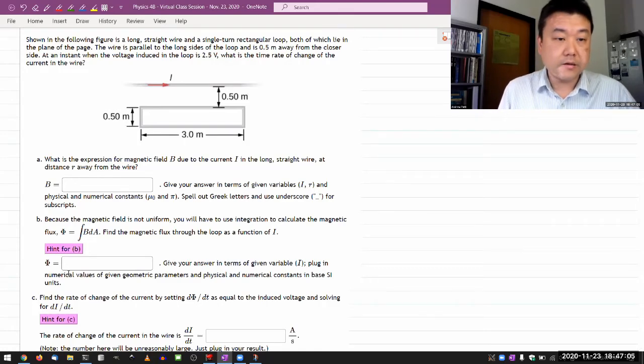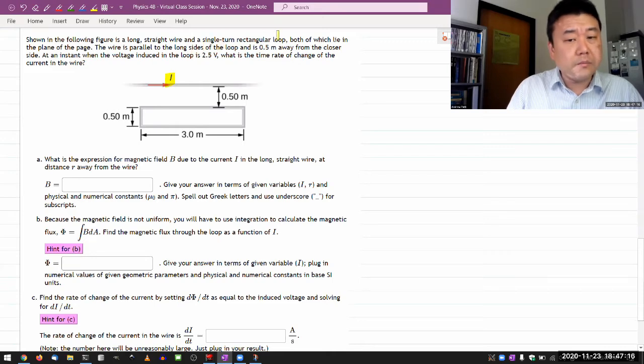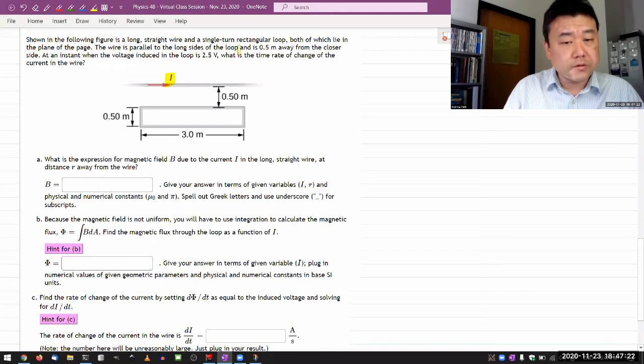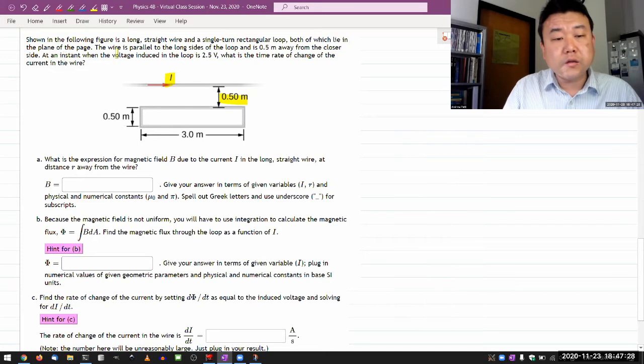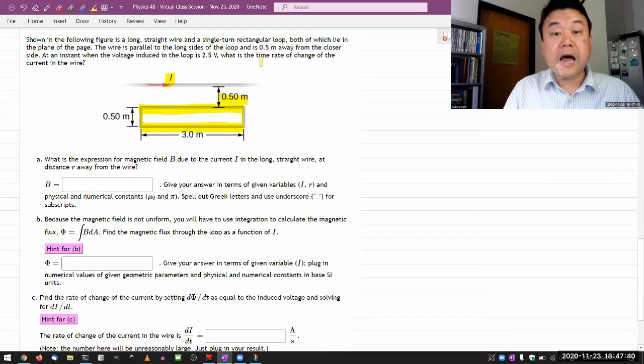Let me do this question. It says, shown in the following figure is a long straight wire that's carrying some current and a single turn rectangular loop, both of which lie in the plane of the page. The wire is parallel to the long side and 0.5 meter away from the closer side. At an instance when the voltage is induced in the loop, there must be Faraday's law involved. What is the rate of change of the current in the wire? So I guess this is apparently going to be a function of time.